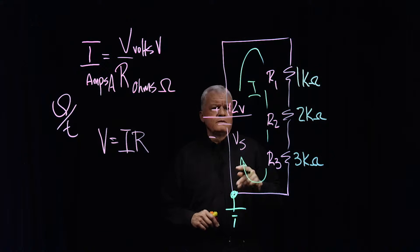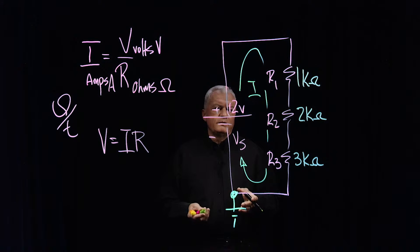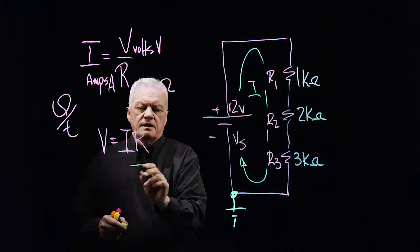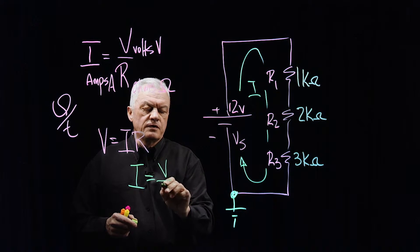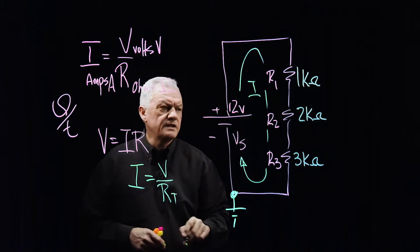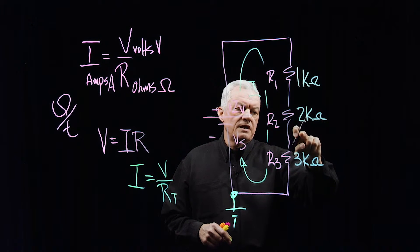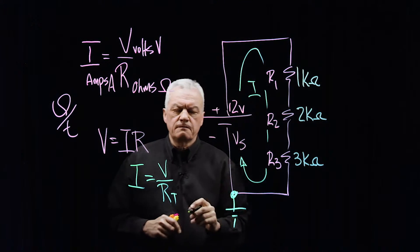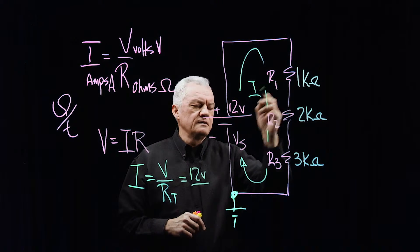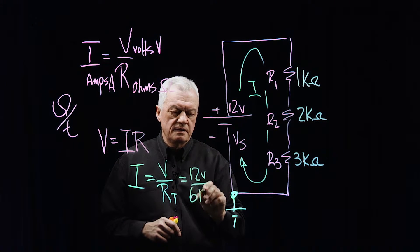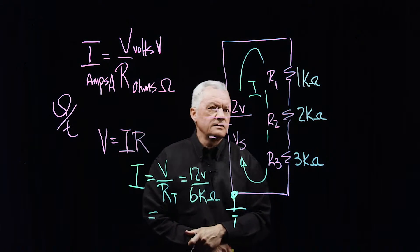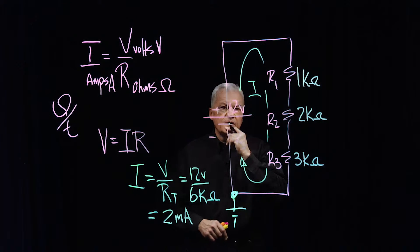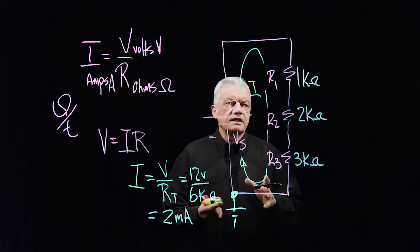We have voltage, we have resistance, we don't know the current just yet. We'll have to determine that using the formula from Ohm. We said I equals V over R. In this case here, our total resistance RT is the 1K plus the 2K plus the 3K. All three resistors in series add. They all contribute to the opposition of current trying to flow. So what we've got is 12 volts divided by 6,000 ohms, and that equals 2 milliamps, 2 times 10 to the minus 3 amps. So we know what our current flow is right now, 2 milliamps flowing through the circuit.